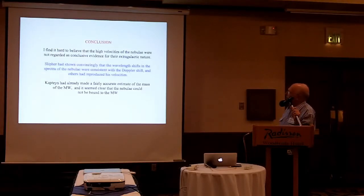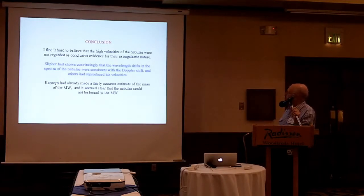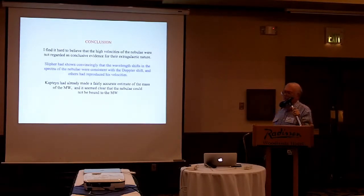In conclusion, I still find it hard to believe that the high velocities of the nebulae were not regarded as conclusive evidence for their extragalactic nature. Slipher had shown convincingly how the shifts in the spectrum of the nebulae work, others had reproduced these velocities, Kapteyn had already made a fairly accurate estimate of the mass of the Milky Way — and it was clear even at that time that the nebulae literally could not be gravitationally bound to the Milky Way. So I think Slipher is very unfortunate to be missing out on this credit. Thank you.